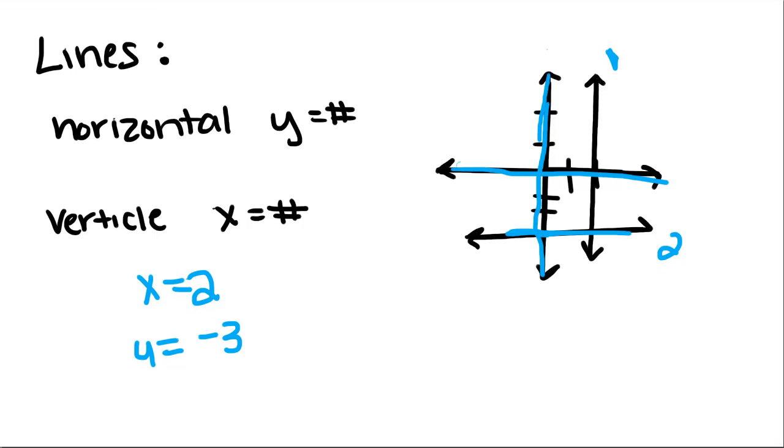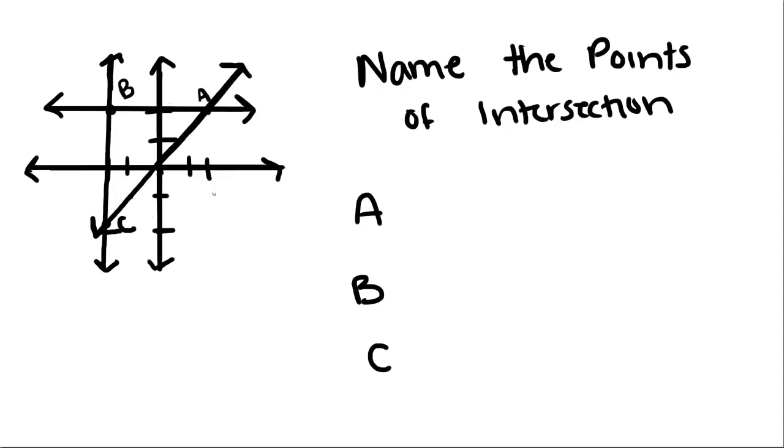The last thing we're going to talk about are points of intersection. It's where two lines meet. It's the two places they have in common, or the one place that two lines have in common.